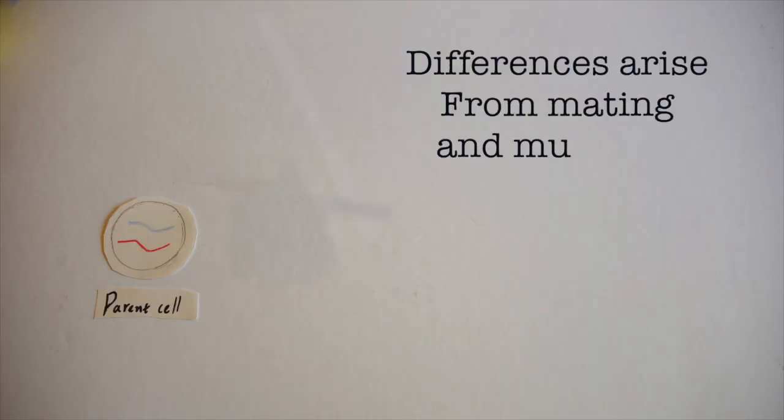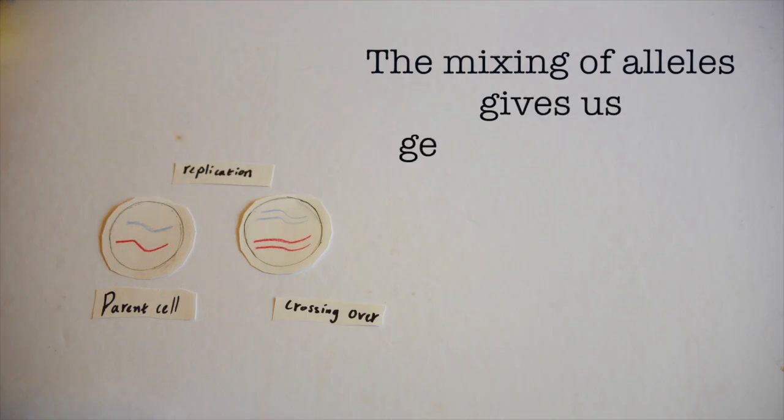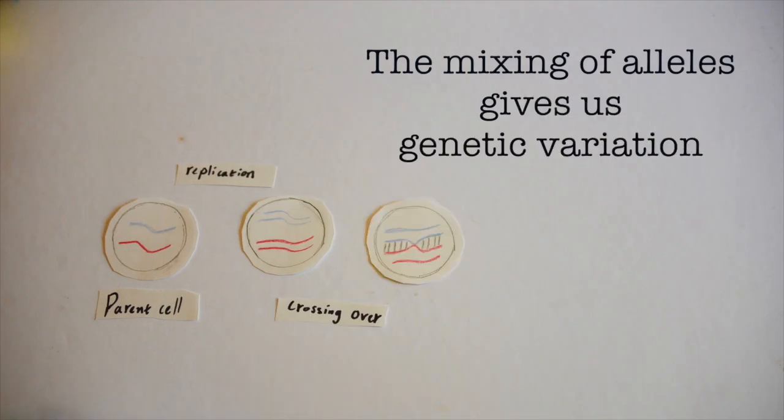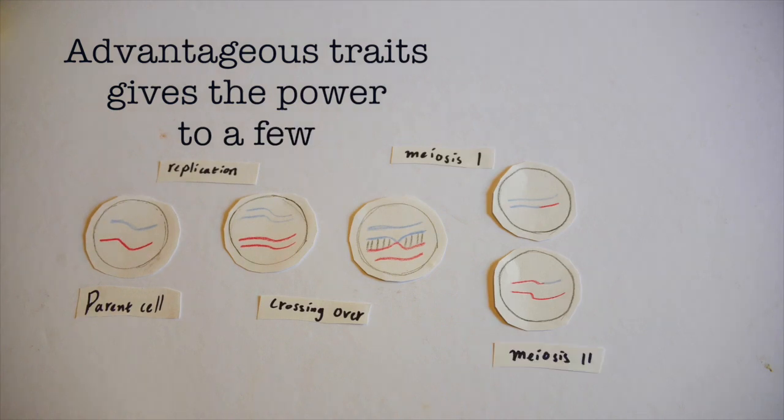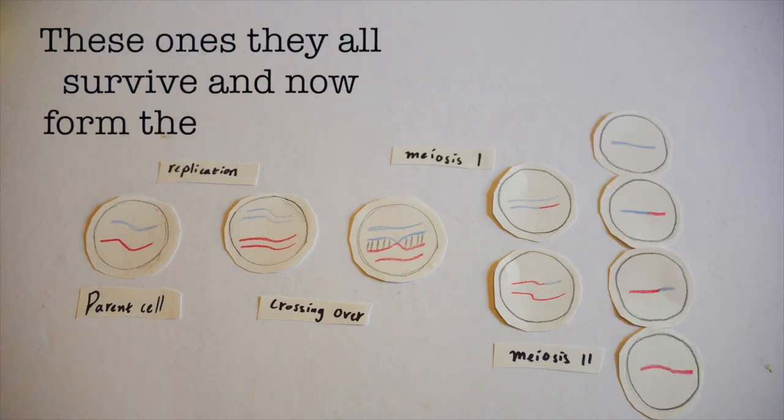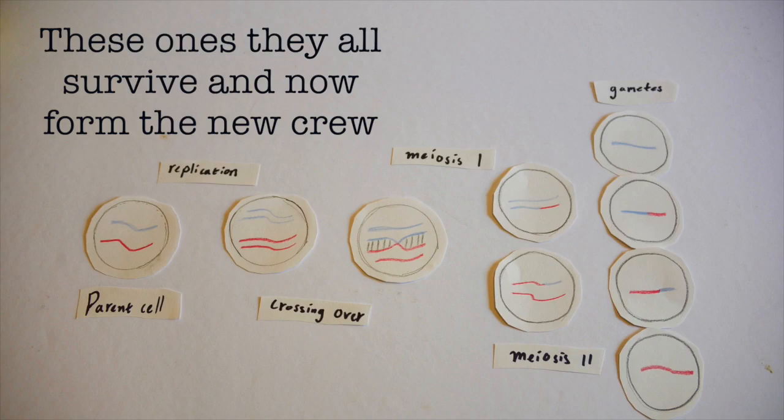Differences arise from mating and mutation. The mixing of alleles gives us genetic variation. Advantageous traits give the power to a few. These ones, they all survive and now form and accrue.